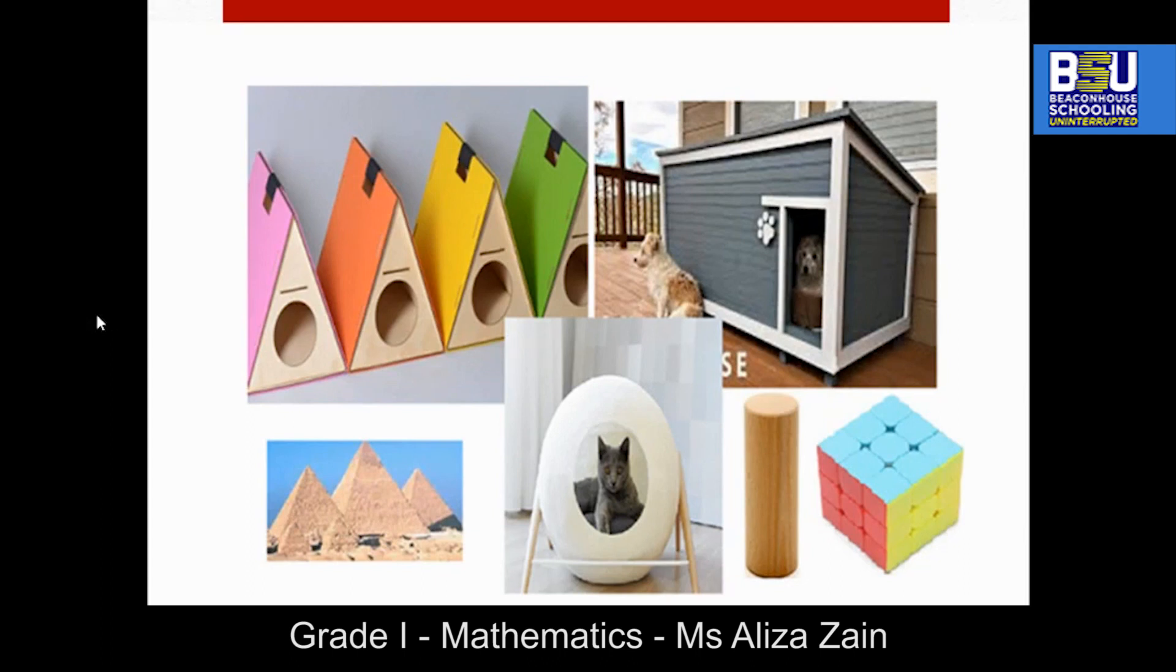Now we are going to compare these 3D shapes with each other. As you know, 3D shapes may have flat surfaces or flat faces, curved surfaces, edges, or vertices. So let's start with this cube. What do you think? How many flat faces does a cube have? Amazing, it has a total of six flat faces. And what about this cat house? It doesn't have any flat face. And this pyramid? Yes, it has a total of five flat faces.